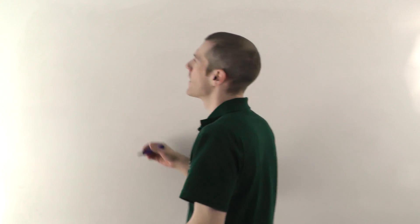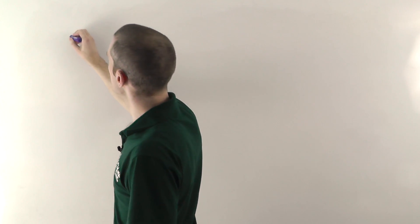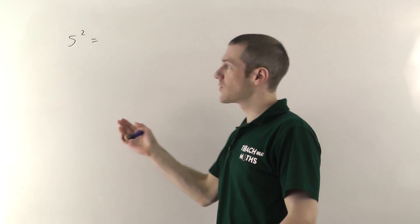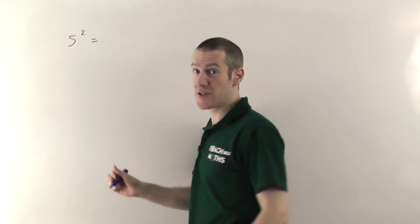Let me just go through a few examples. So if you've got let's say 5 squared, 5² would be 5 times 5, which is 25.